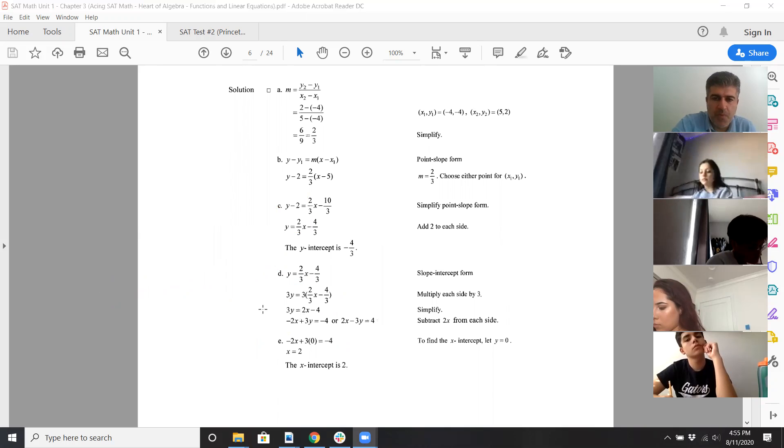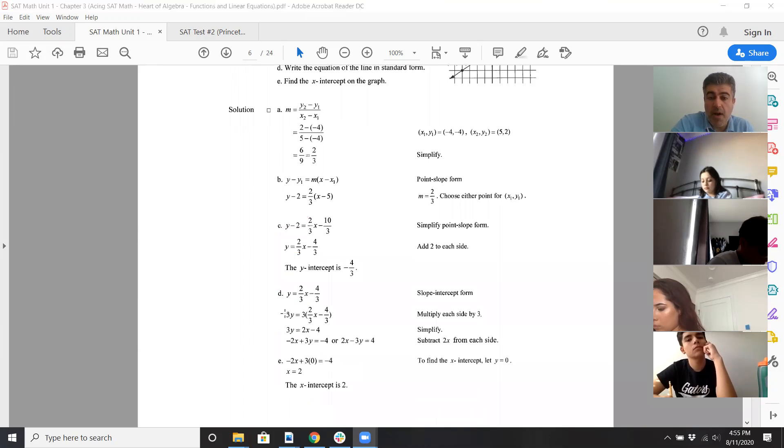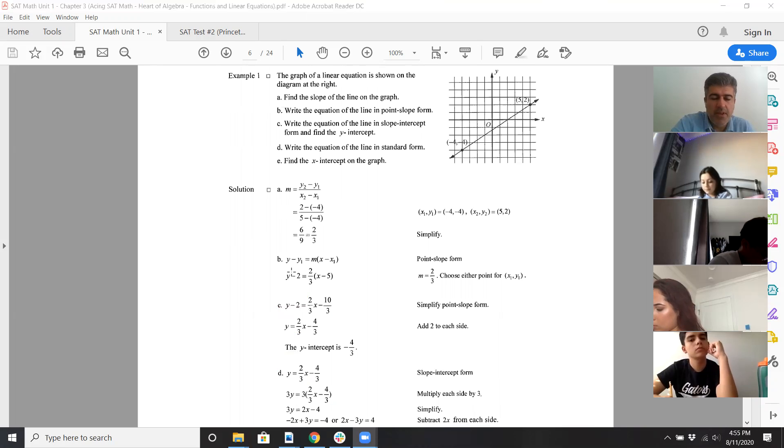And then, move all variables on one side. Find the x-intercepts when you plug in zero for y, solve for x. You could have done it whether it's standard form, slope-intercept form, or point slope-form. You're just plugging zero for y, solve for x.